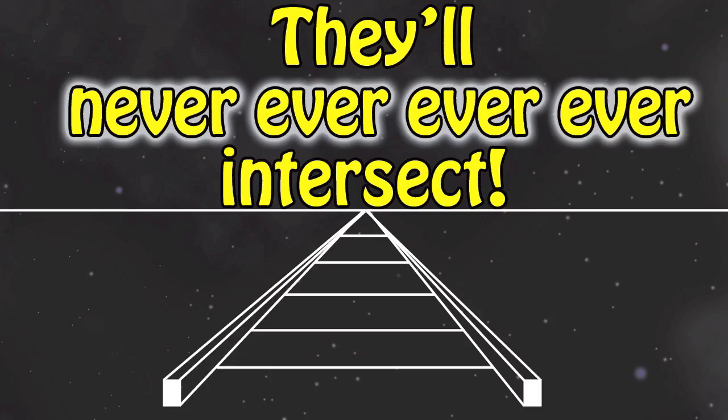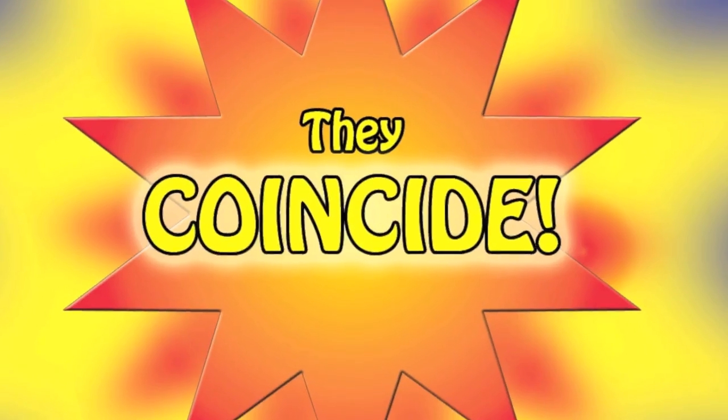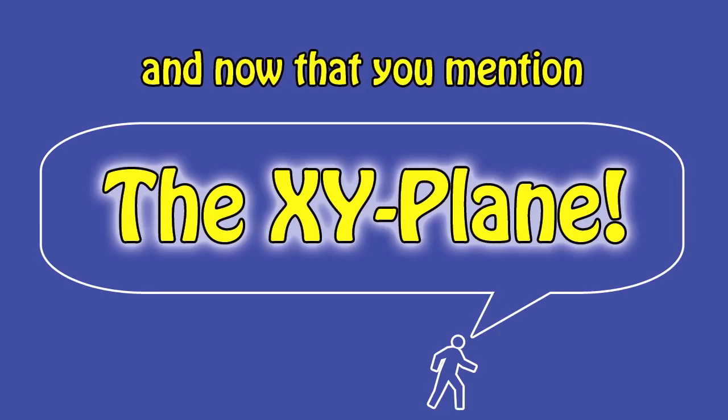They're also called inconsistent lines — they'll never, ever, ever, ever intersect. The lines with the same slope and same intercept are coincident lines; they coincide. Perpendicular lines have a negative reciprocal slope, so they cross once in the XY plane.